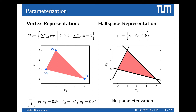Another representation of polytopes is the half-space representation, where the polytope is described as the intersection of multiple half-spaces. In this case, we don't have parameters delta for a linear combination — we just have inequality constraints — and therefore there is no parametrization here. We say the half-space representation is not parametrized. To summarize: when we have parameters from a linear combination or similar structure for the set representation, we say it is parametrized. If the states are given implicitly, as in the half-space representation, the set representation is not parametrized.